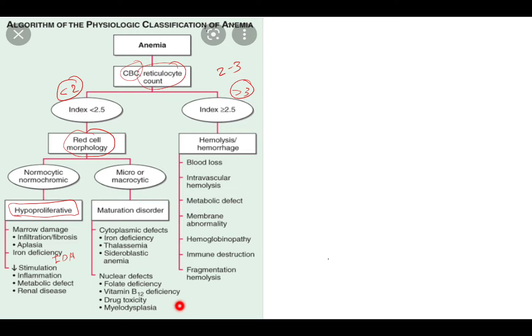In case the morphology is micro or macrocytic, there is deficiency in maturation, which is either of cytoplasm or nuclear. If cytoplasm defects, there could be IDA, thalassemia, and sideroblastic anemia. Nuclear defects are folate deficiency, B12 deficiency, myelodysplasia.